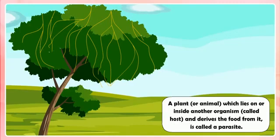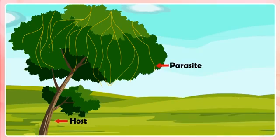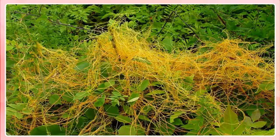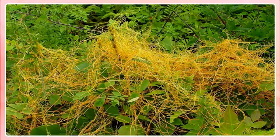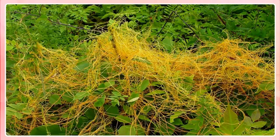Parasites. A plant or animal which lives on or inside another organism called a host and derives food from it is called a parasite. An example of a parasitic plant is the cuscuta. A cuscuta plant does not have chlorophyll — we can see from the picture it is yellow in color. Therefore, it cannot synthesize its own food and takes ready-made food from the tree or plant on which it climbs.